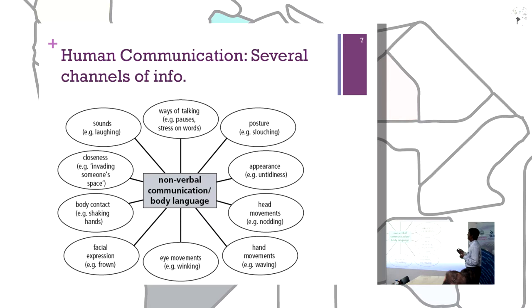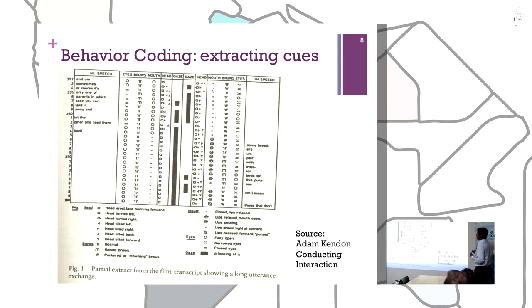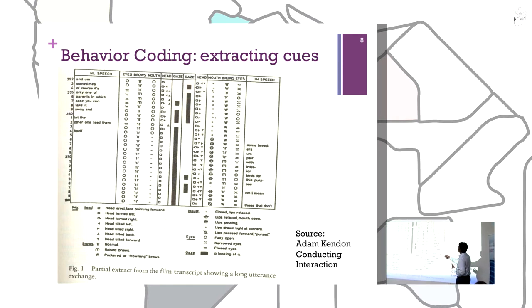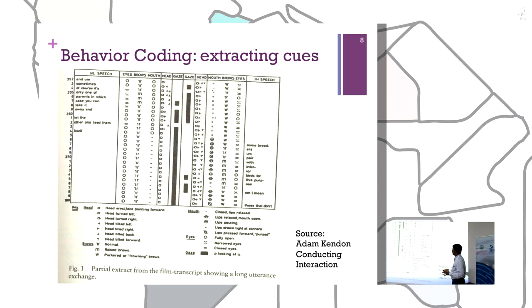Social psychology literature has studied human communication and identified different channels of information — also referred to as body language: posture, appearance, head movements, hand movements, eye movements, facial expression, and so on. Traditionally, behavior is coded manually, where somebody looks at every frame of an interaction and marks, for example, whether the eyes are open or closed — annotating visible eyes, brows, mouth, head, gaze, and what is being spoken by each participant. This is very time-consuming.